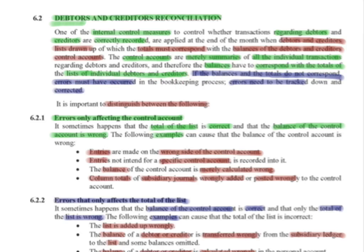From the debtors and creditors ledger, where the individual accounts are found, I take all final balances in each personal account and draw up a list that stipulates exactly how much they all owe me together. The total on this list must correspond with the balance in the control account. If these balances and totals do not correspond, it means errors have been made in the bookkeeping process. Errors need to be tracked down and corrected. It's impossible for the control account to differ from the list because it's the same information recorded twice — it should give the exact same answer.